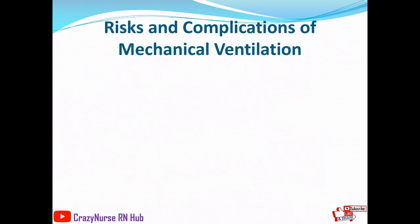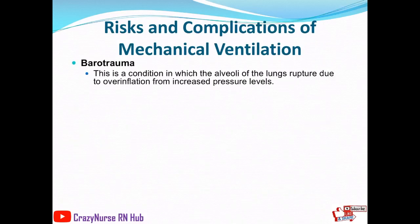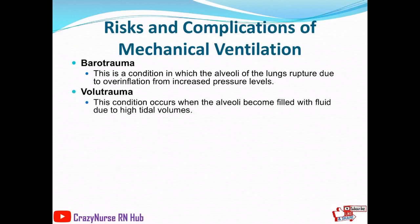What are the risks and complications of the mechanical ventilator? First is barotrauma — a condition in which the alveoli rupture due to overinflation from increased pressure levels, causing the lungs to collapse and leading to serious lung conditions. We also have volutrauma, which occurs when the alveoli become filled with fluid due to high tidal volumes. Tidal volume refers to the amount of air transported into the lungs during inhalation. Volutrauma commonly occurs in patients with ARDS and those who have had a blood transfusion.